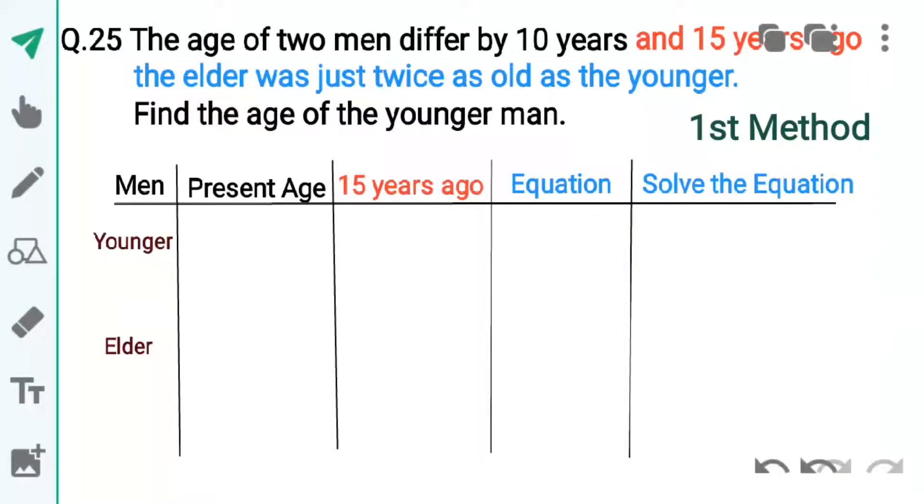Question hai: The age of two men differ by 10 years and 15 years ago the elder was just twice as old as the younger. Find the age of the younger man.